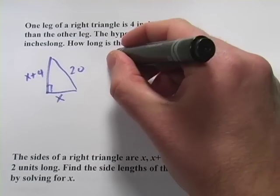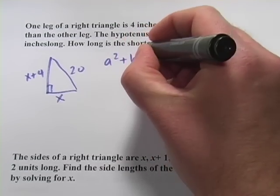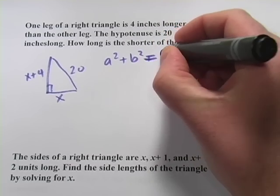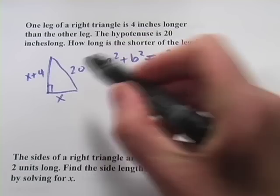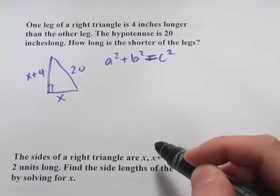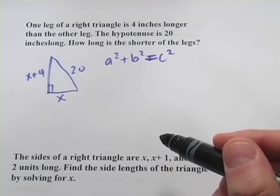Now the Pythagorean Theorem, as you'll remember, is a squared plus b squared equals c squared, where c is the hypotenuse. So all we have to do is plug these values in to the Pythagorean Theorem and then solve the quadratic that results.